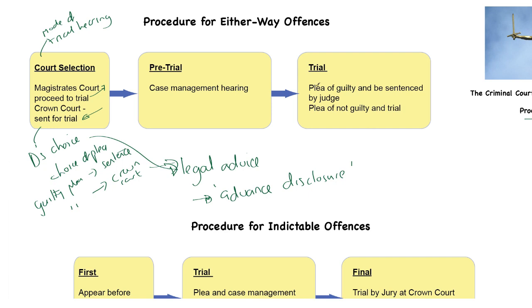At the trial there is then either a plea of guilty and we go straight to sentencing by the judge, or a plea of not guilty and we go to trial by jury. That's the either-way offense procedure.